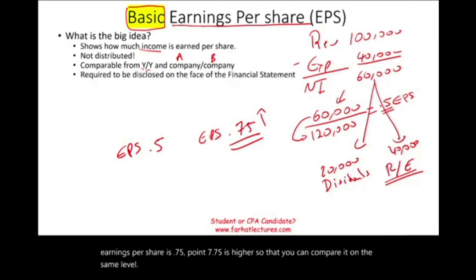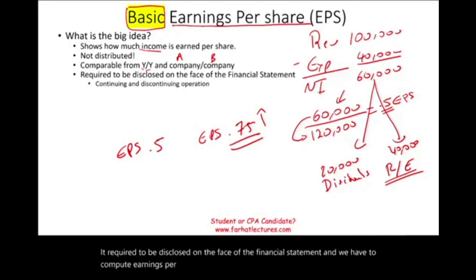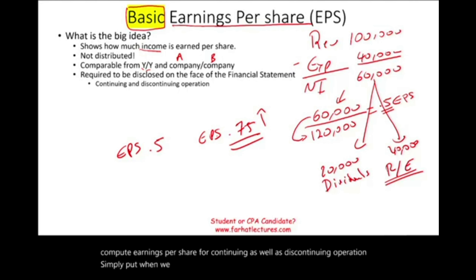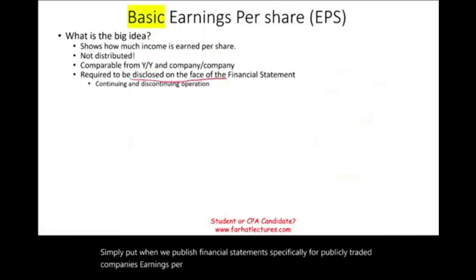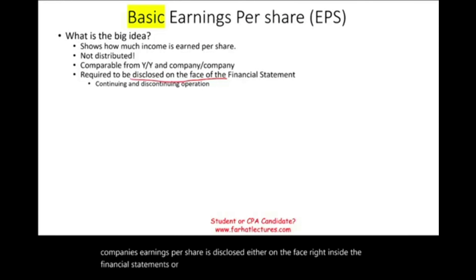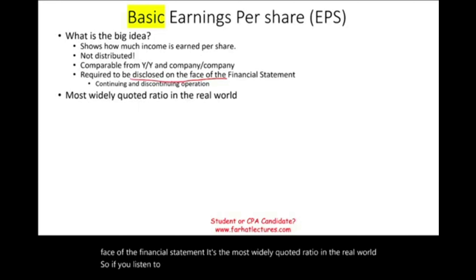Earnings per share is required to be disclosed on the face of the financial statement. We have to compute earnings per share for continuing as well as discontinuing operations. When we publish financial statements specifically for publicly traded companies, earnings per share is disclosed either on the face right inside the financial statements or close by. It's the most widely quoted ratio in the real world. If you listen to CNBC or follow the Wall Street Journal, earnings per share is constantly quoted in determining the value of the company.